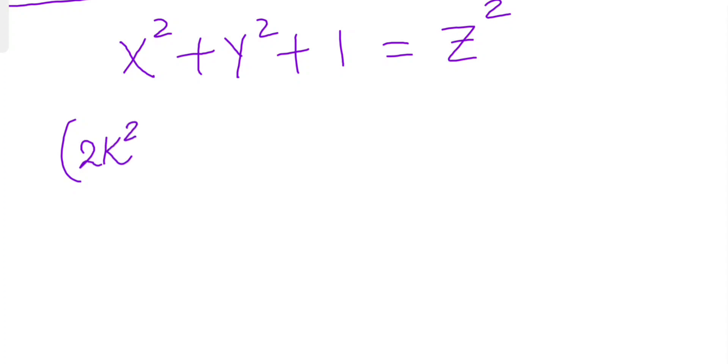(2k²)² + (2k)² + 1 = (2k²+1)². This is the formula we have.